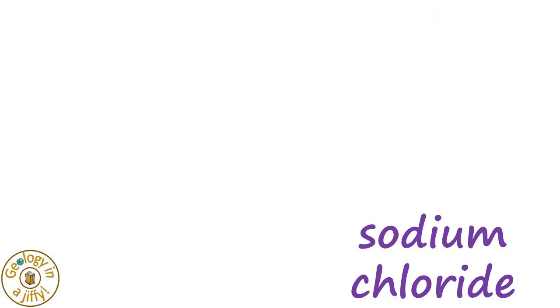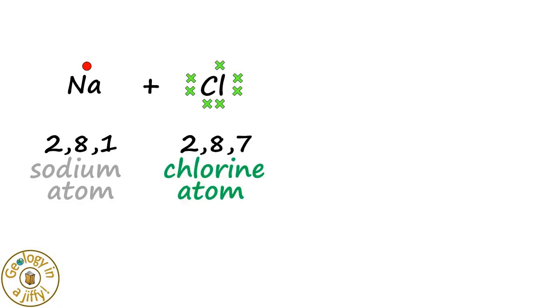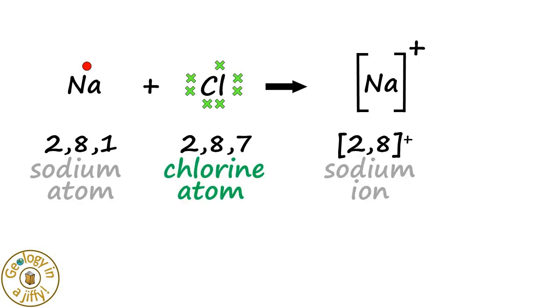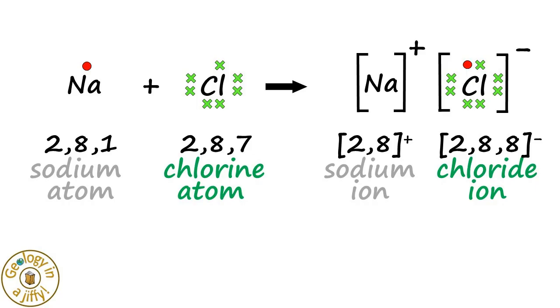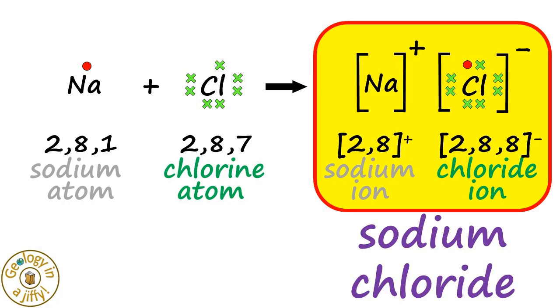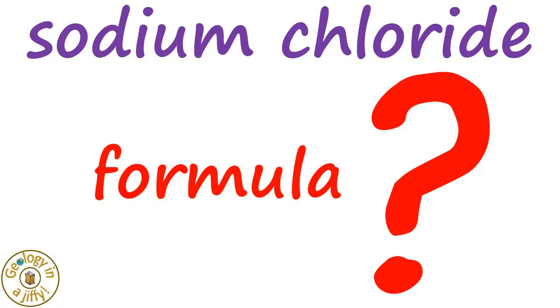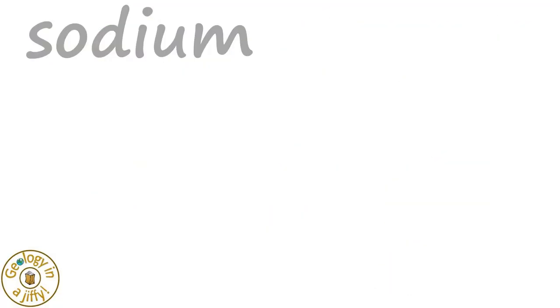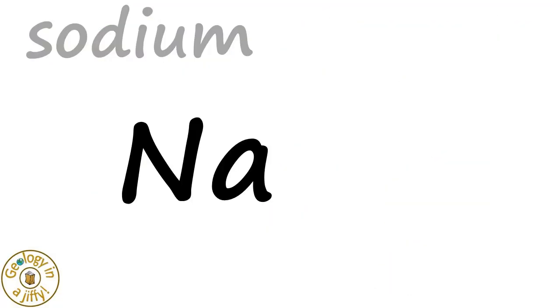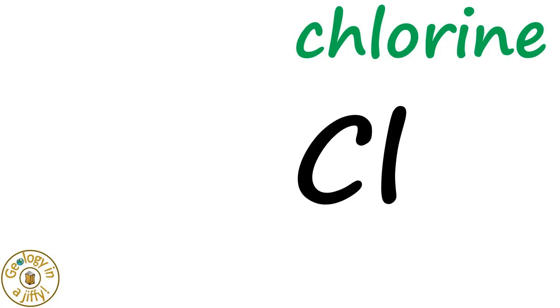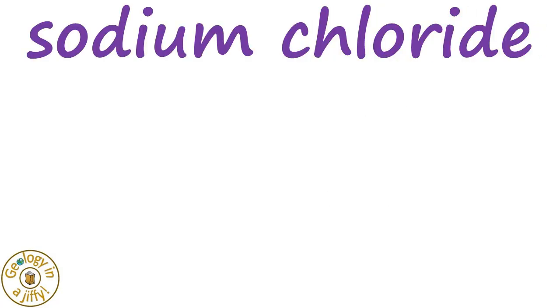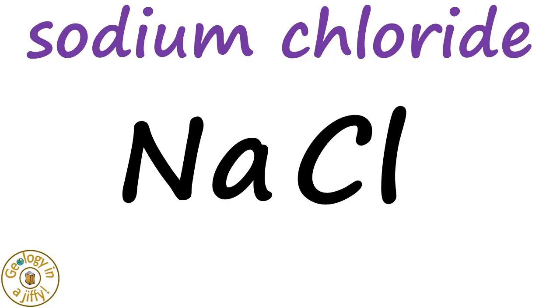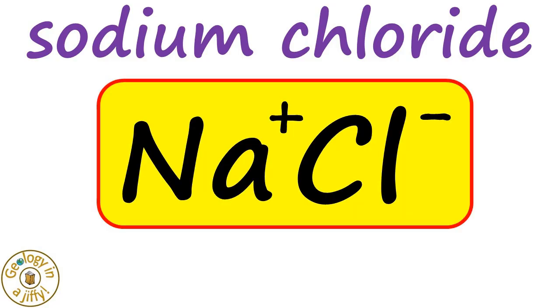To make sodium chloride, we need a sodium atom and a chlorine atom to make a sodium ion bonded with a chloride ion. What is the formula for sodium chloride? The symbol for sodium is Na, the symbol for chlorine is Cl, so the formula for sodium chloride is NaCl, or more correctly written as Na+ Cl-.